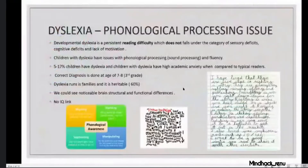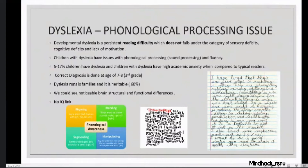Dyslexia — the word comes from Greek roots. 'Dys' means impaired, and 'lexia' means speech sound or word. So, problem with speech sounds and words is what we call dyslexia. It is basically a phonological processing issue — they have a reading disability and reading difficulty.